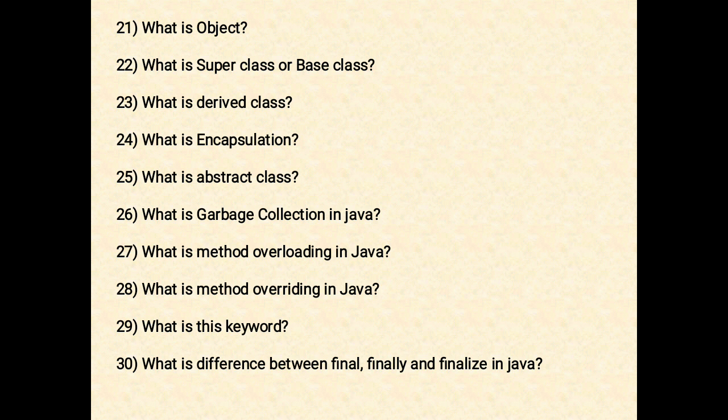The next question: what is an abstract class? An abstract class is a class from which you cannot create an object. We can only extend such classes. We can achieve partial abstraction using abstract classes. To achieve full abstraction, we use an interface.